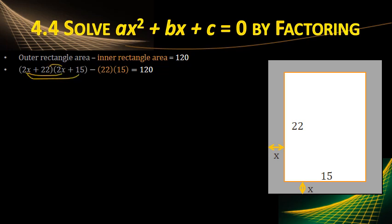Let's multiply everything together. So we're going to FOIL here. So we do the first, which is the 4x squared. Outers, that's the 2x times 15, or 30x. Inners, 22 times 2x, which is the 44x. Last, 22 times 15, which is the 330. And then we minus the 22 times 15. That was already there. So it's minus 330, and it equals 120.